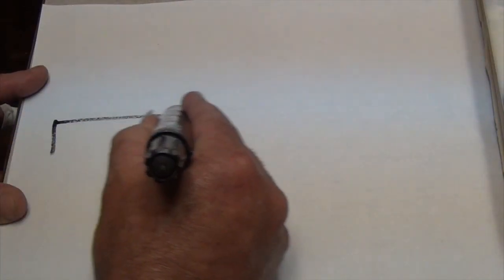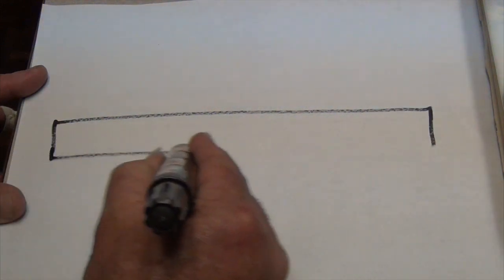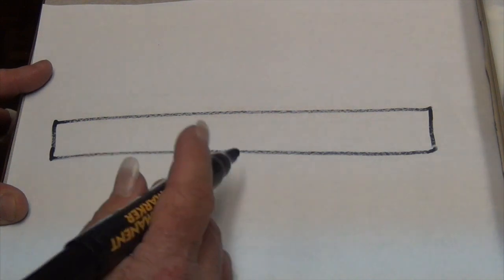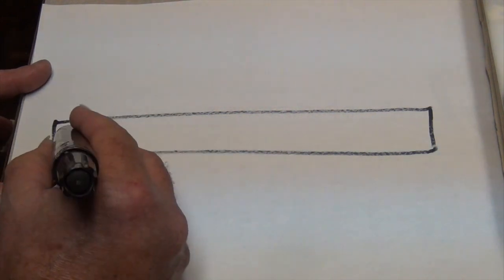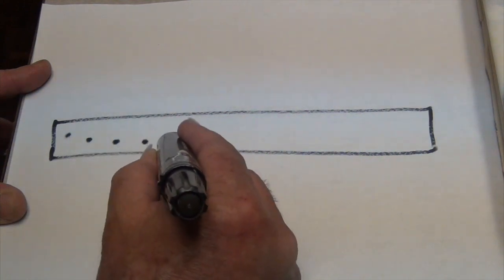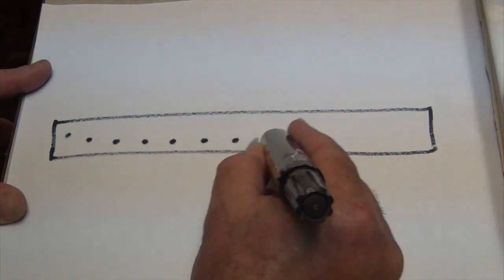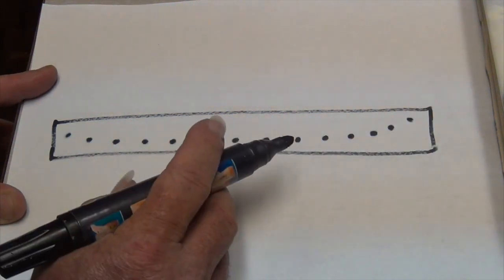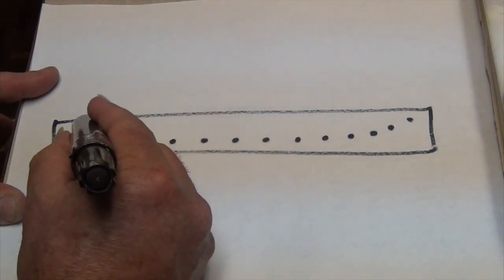Next, lay your stringer on the floor and take the x and y coordinates for the rocker profile. Take a ruler and mark off some coordinates for the bottom rocker onto the face of the stringer, and then do the same thing for the foil of the board.